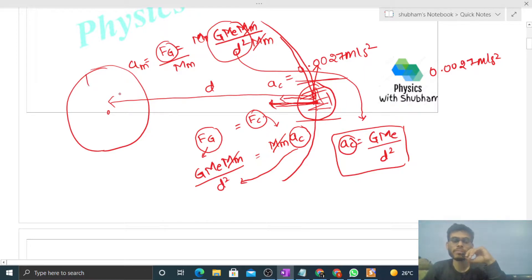And the Earth will also accelerate towards the moon with an acceleration whose value will be the force, the gravitational force of attraction Fg, divided by mass of the Earth. You can calculate its magnitude as G times mass of the moon divided by D squared. This will be the initial acceleration of the earth towards the moon.